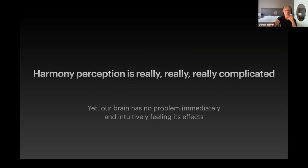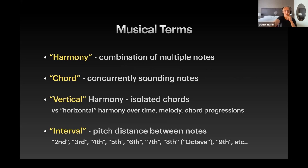It turns out harmony perception is really complicated. So if you're going to try to visualize it and quantify it, it's no easy task. Which might be why it hasn't been done yet. Not that well. So just for some of you that are maybe not musicians, some basic terms here. Harmony is multiple notes. Chords are concurrently sounding notes. Vertical harmony is isolated chords or stationary chords. Versus horizontal harmony, which is chord progressions or melody or what you typically listen to in a song. But I'm mostly concerned with vertical harmony right now. Because that allows me to isolate each individual chord. And the emotions we feel with each chord. An interval is the distance between each note.